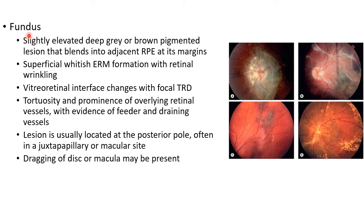The symptoms include decreased vision or strabismus in early childhood. Fundus findings include a slightly elevated deep grey or brown pigmented lesion that blends into adjacent RPE at its margins. There can be superficial whitish epiretinal membrane formation with retinal wrinkling, vitreoretinal interface changes with focal tractional retinal detachment, and tortuosity and prominence of overlying retinal vessels with evidence of feeder and draining vessels. The lesion is usually located at the posterior pole, often in a juxtapapillary or macular site.